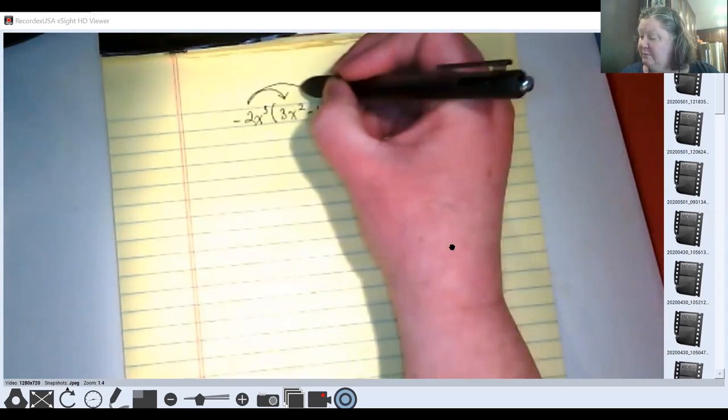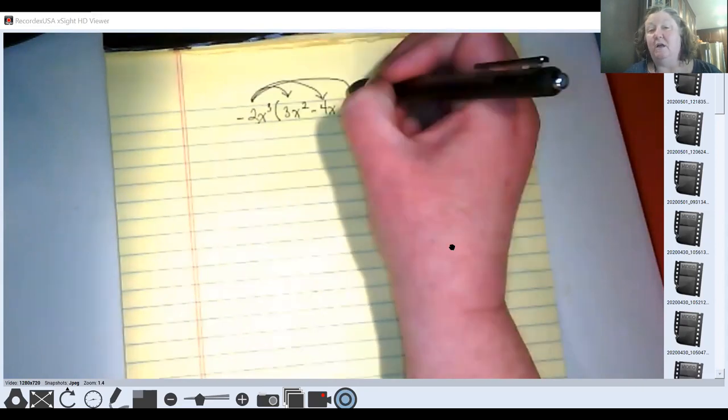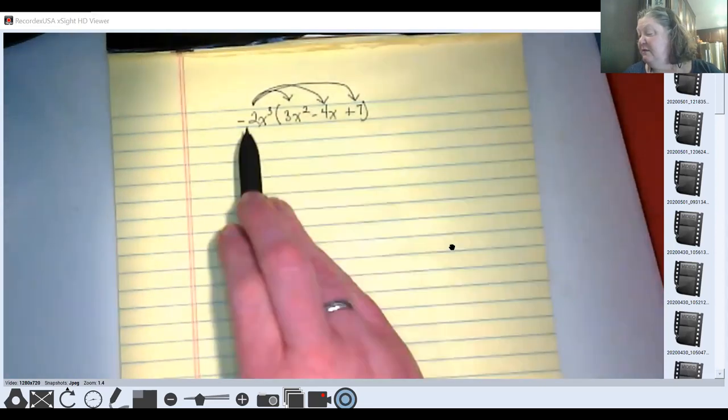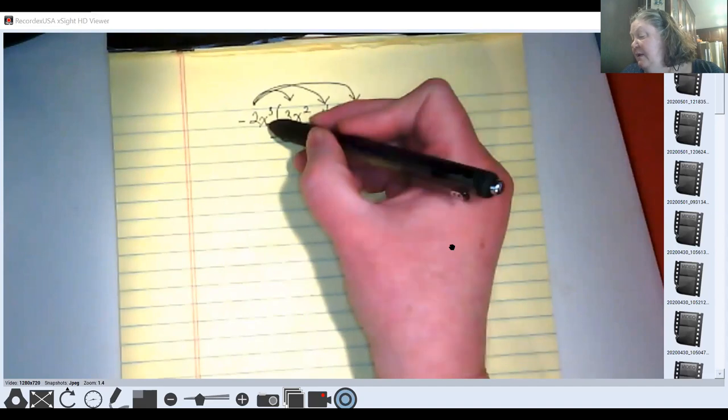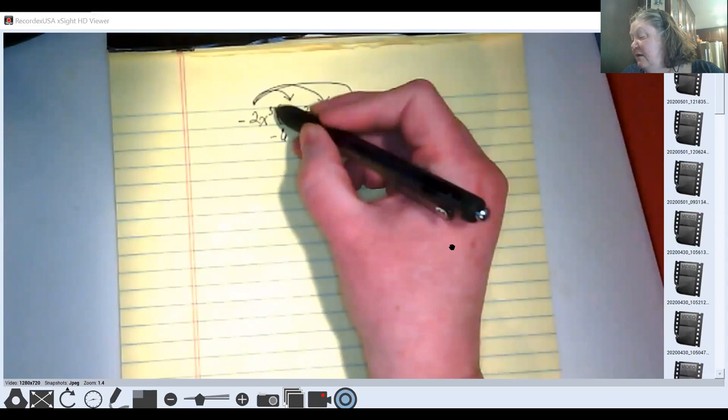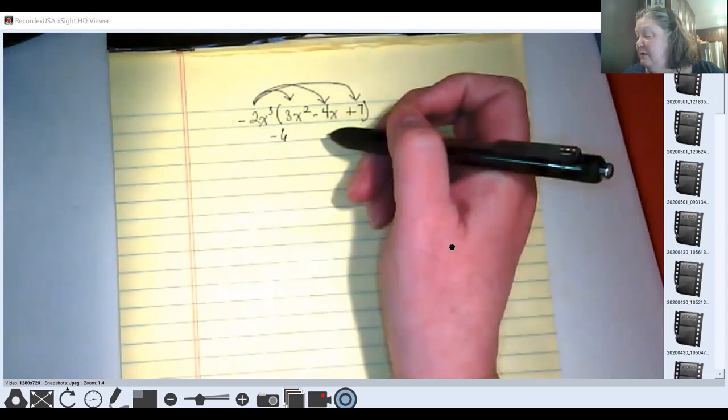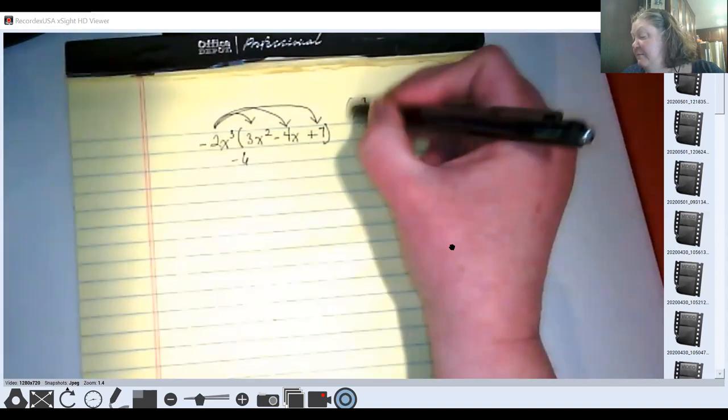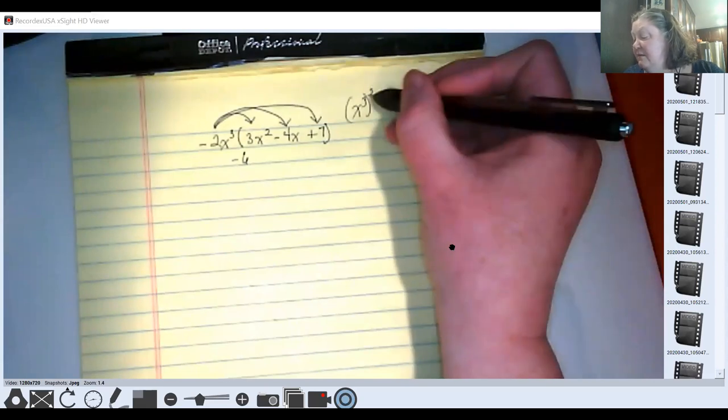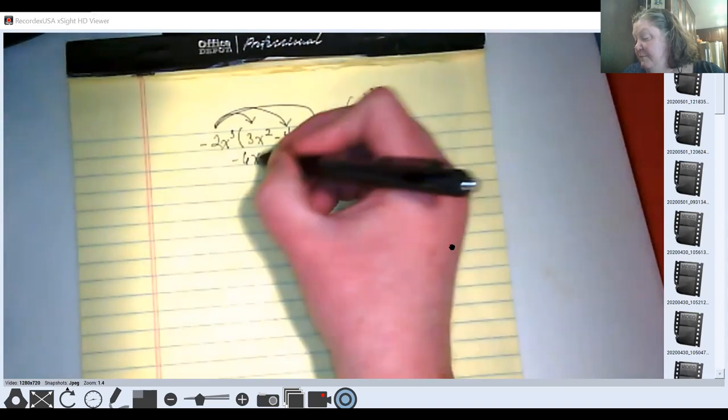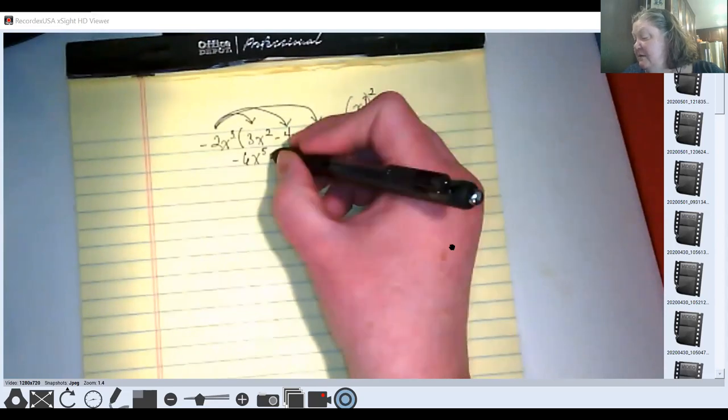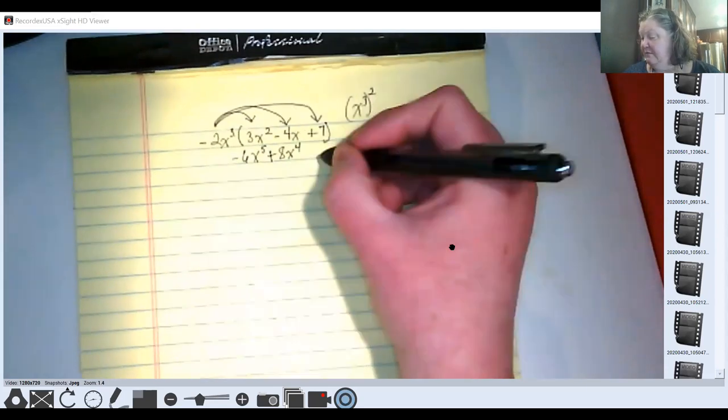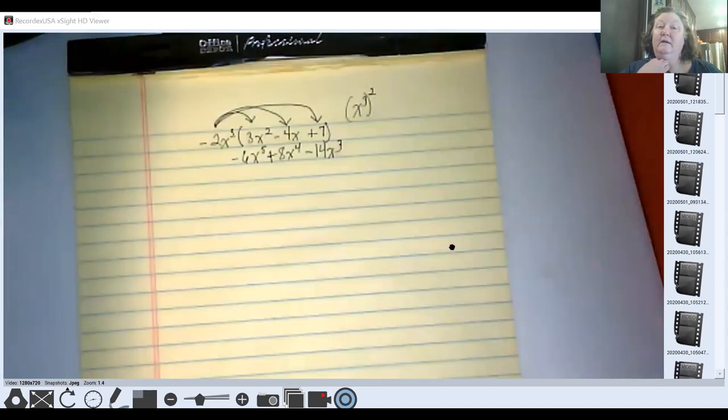The traditional way to do this is distribution. And so I've drawn my claw to show what I'm distributing. Negative 2x to the third would have the negative 2 times positive 3, giving us a negative 6. X to the third would be added to x to the second because this is an x to the third times an x to the second. It's not a power to the power. That would be something that looked like this, where there's no other variable with this. Instead, I've got like bases. So I'm going to add these and I get x to the fifth. And then I get negative 2x to the third times negative 4x. Negative 2, negative 4 gives me positive 8x to the fourth minus 14x to the third. And that works just fine. We're able to distribute in that way and not get too confused.